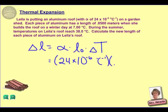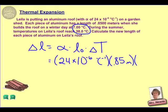Our initial length is 0.85 meters. The change in temperature can be found by comparing the original temperature of 7 degrees to the final temperature of 38 degrees, and we end up with a change of 31 degrees Celsius.